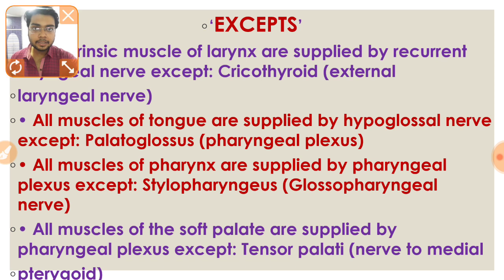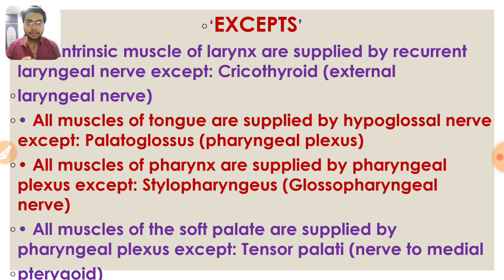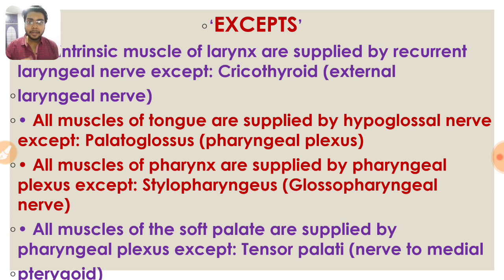Now some important 'except' questions for your exam. All intrinsic muscles of the larynx are supplied by the recurrent laryngeal nerve except one — the cricothyroid, which is supplied by the external laryngeal nerve. All muscles of the tongue are supplied by the hypoglossal nerve except the palatoglossal, which is supplied by the pharyngeal plexus.